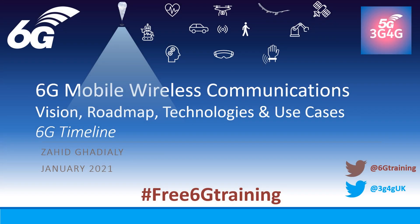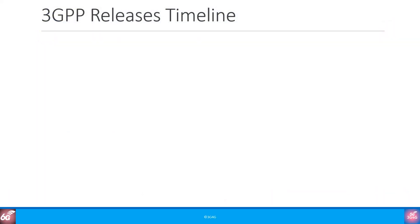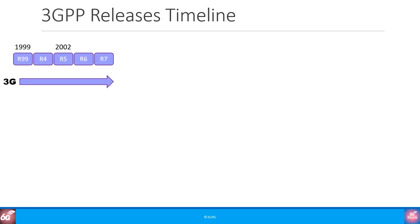We have looked at the 6G vision and 6G use cases. Let's now try and understand the 6G timelines from the standards point of view. Let's look at the 3GPP releases timeline from the beginning and understand the different generations of technologies. The first generation of standards for 3G mobile cellular technology was in 1999, called Release 99 or R99.